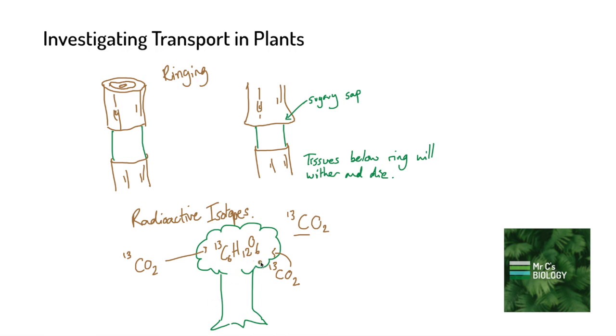We can then trace where this glucose ends up in the tree, and so we can see that actually this radioactive glucose ends up going down the tree in the phloem.